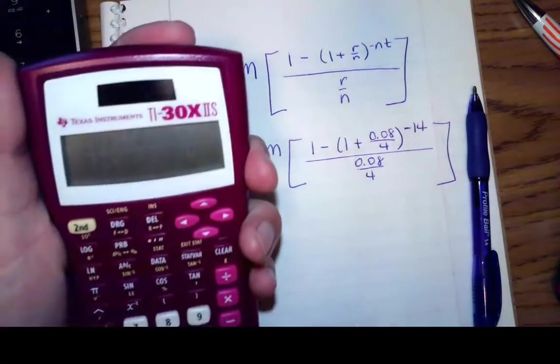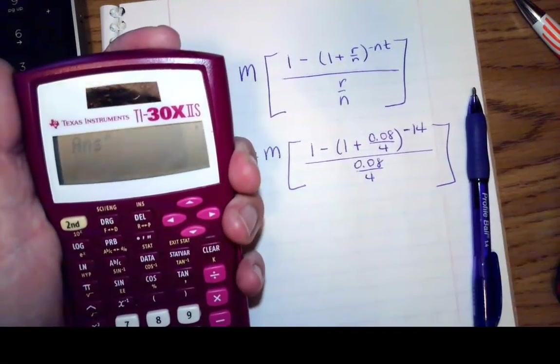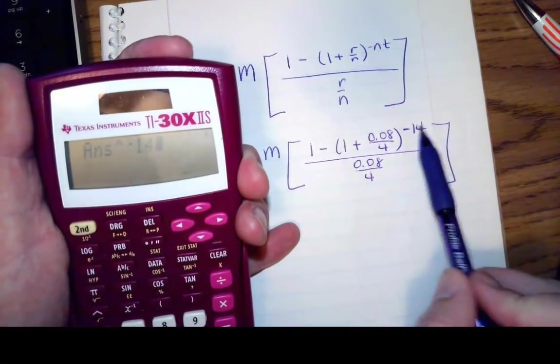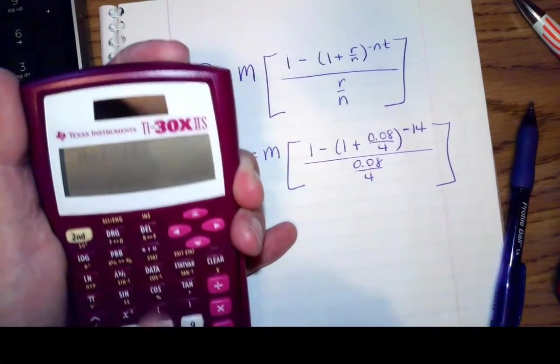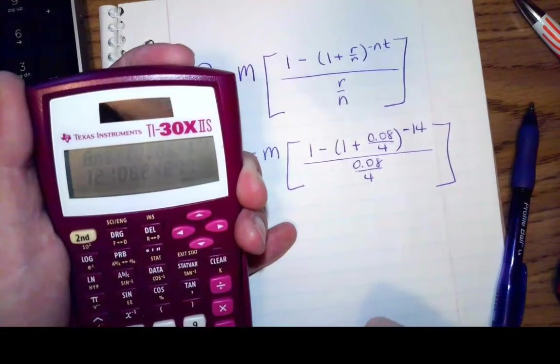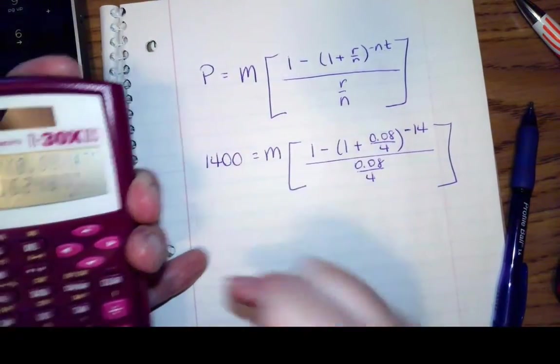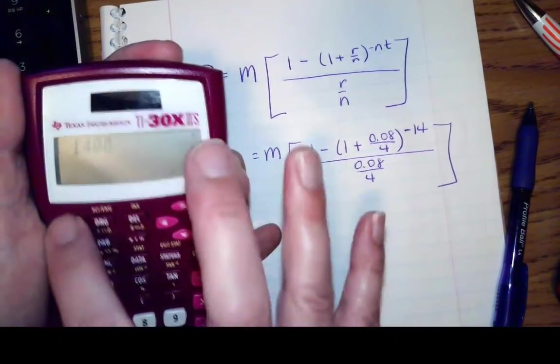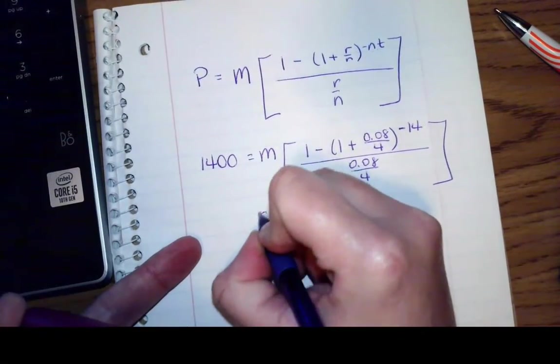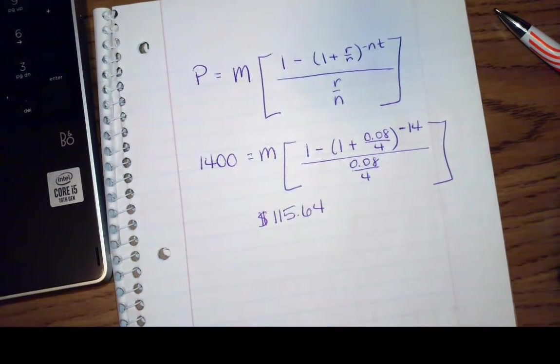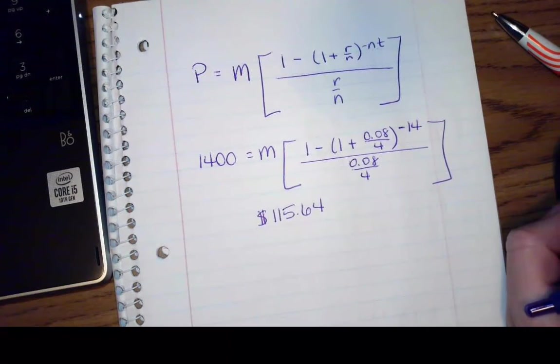So I have 1 plus 0.08 divided by 4, and I'm going to raise that to the negative 14. I don't need parentheses this time because I'm not asking it to multiply. 1 minus that answer divided by 0.08 divided by 4, and I get 12.106 something. So I need to divide 1,400 by that amount. And I get $115.64. So if I pay $115.64, I will have paid off everything that I need to pay off in 14 quarterly payments.